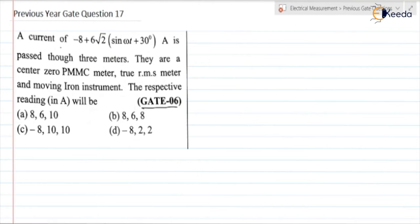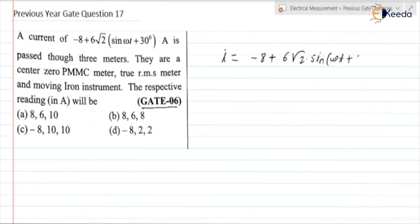Previous year GATE question number 17. Let us read the question. A current of minus 8 plus 6 root 2 into sin(ωt + 30°) ampere is passed through 3 meters: a center-zero PMMC meter, a true RMS meter, and a moving iron instrument. The respective readings in ampere will be? We are having the current I equal to minus 8 plus 6 root 2 into sin(ωt + 30°). Let us consider this as I1 (the DC part) and I2 (the sinusoidal part).